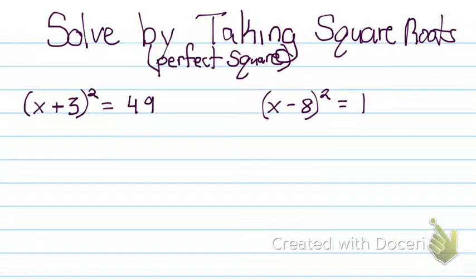The first thing you want to do is to get rid of that square. So you'll have to take the square root of both sides. And then the square root of 49 equals plus or minus 7.